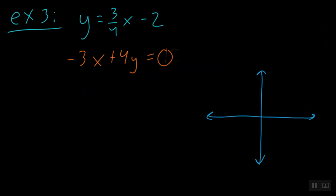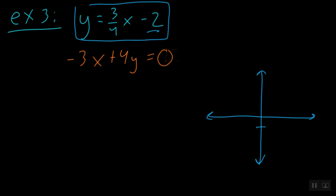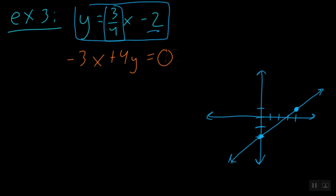For example three, our third and final example, let's start with y equals three fourths x minus two. Our y-intercept is at negative two, so we go down two and put our first point. Our slope is positive three over four, so we go up three and to the right four. Grabbing two points, we draw that function.